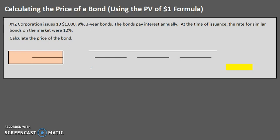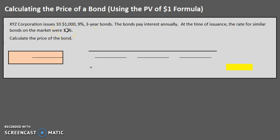Let's take a look at the specific bond we are going to be calculating the price for. We have XYZ Corporation issuing $10,000 — ten $1,000 bonds — 9% three-year bonds that pay interest annually, once a year. At the time of issuance, the rate for similar bonds on the market was 12%. This 9% is known as the coupon rate, the contract rate, or the stated rate, and it tells us how much interest the bond will actually pay. Three years is the term.